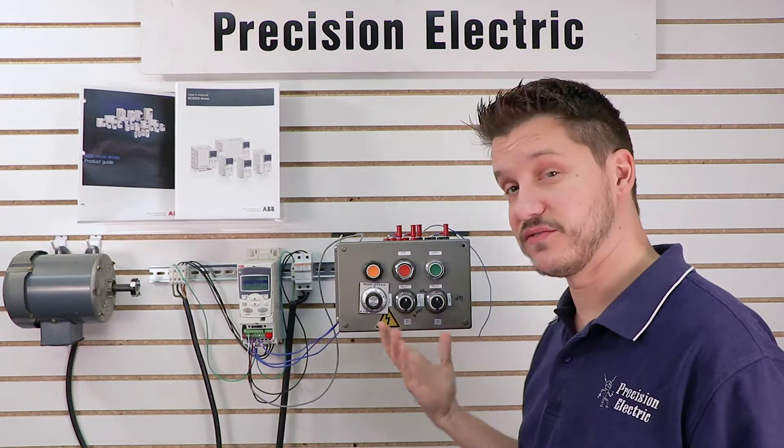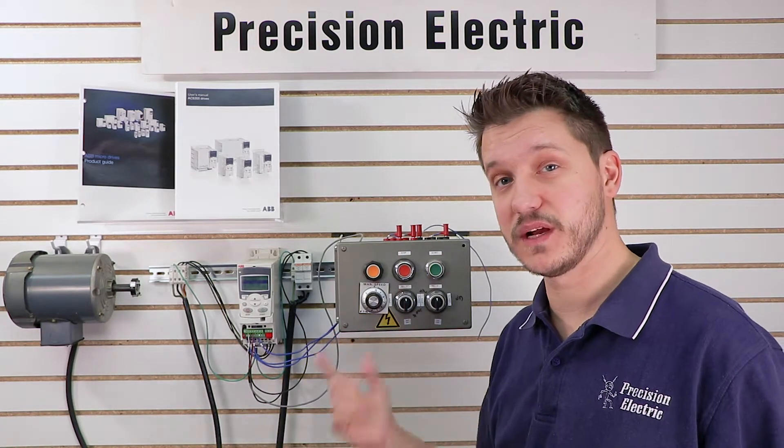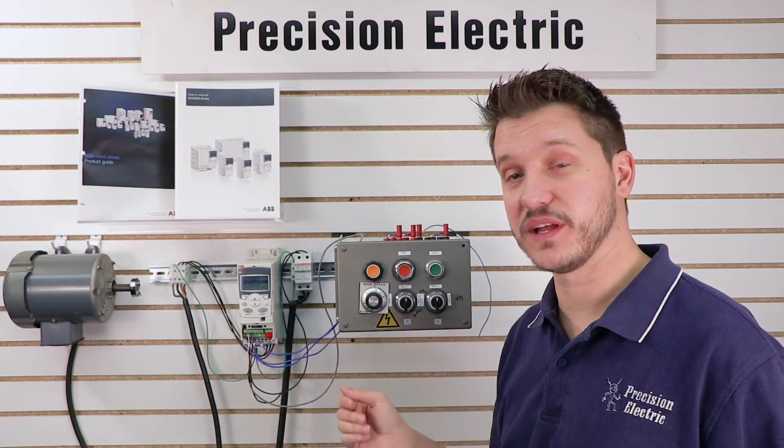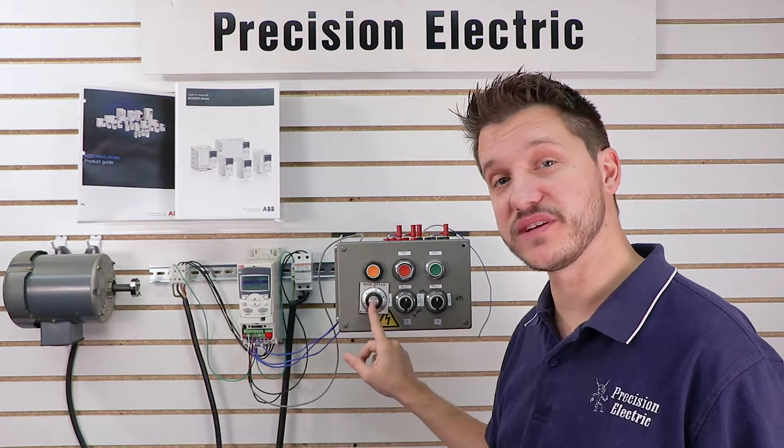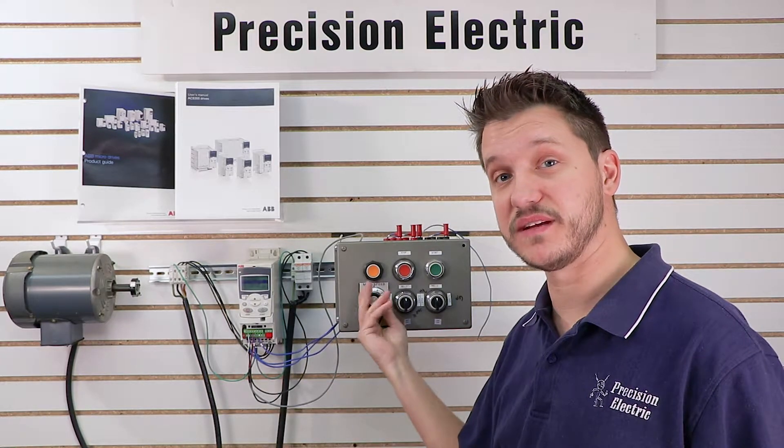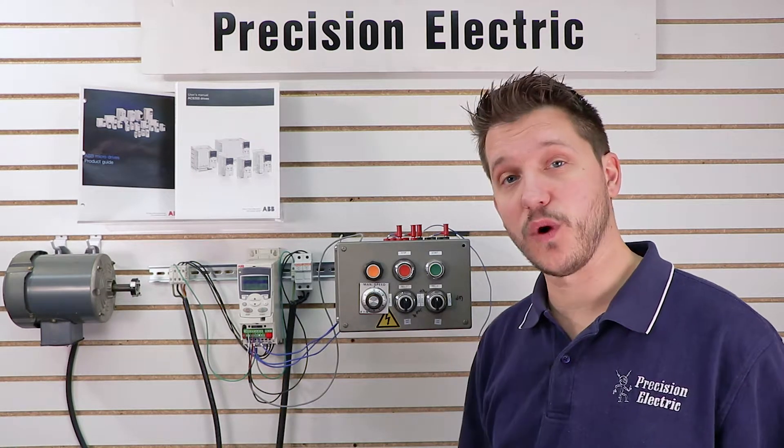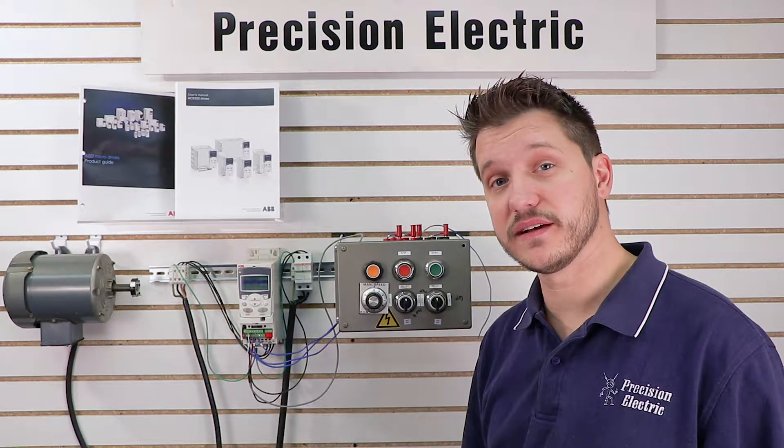If you don't even have forward and reverse, you can wire and set this drive up with just one switch, and you can run it remotely however you'd like. As with the previous videos, we've already got this setup for speed pot control, so we can control our speed using the speed potentiometer. So let's go ahead and get it wired and programmed, and show you what it can do.